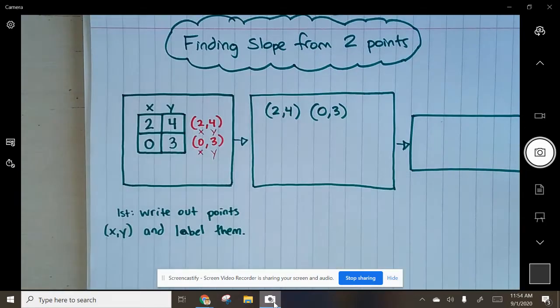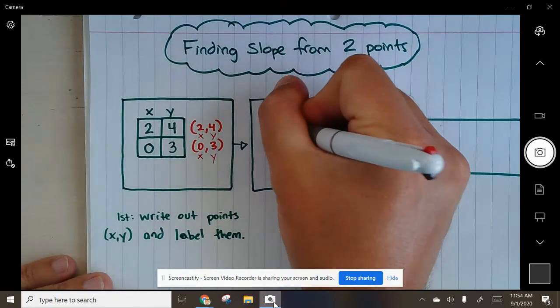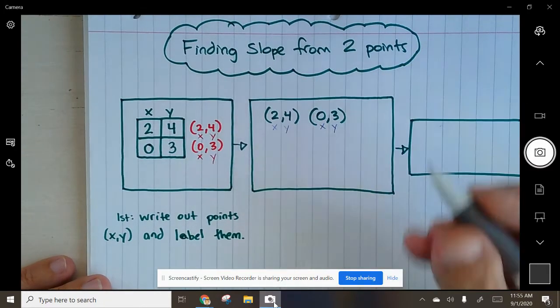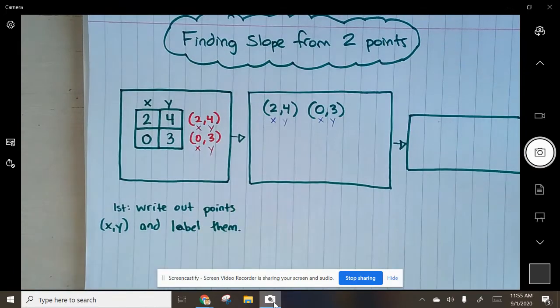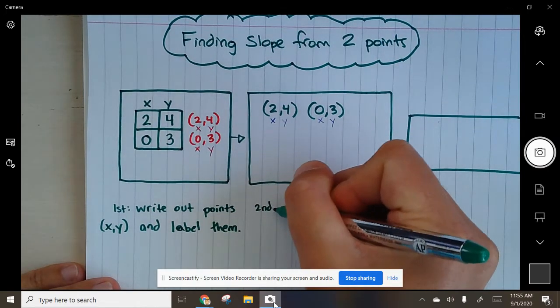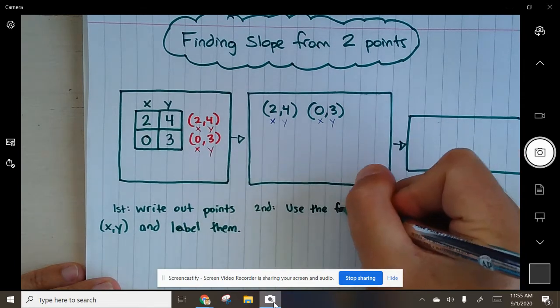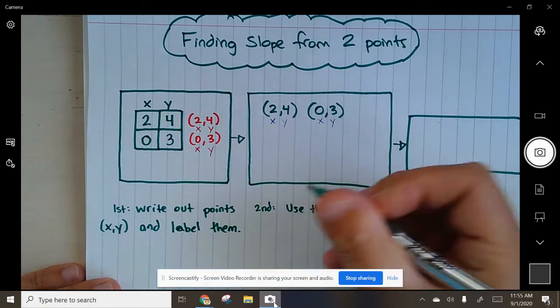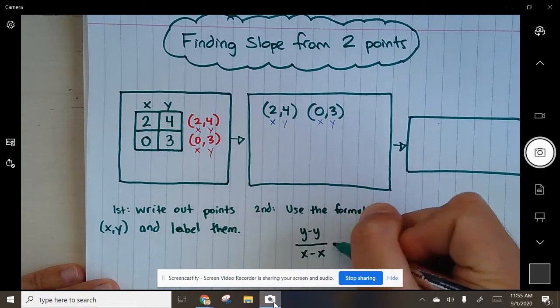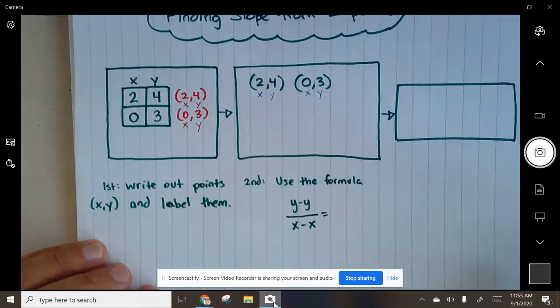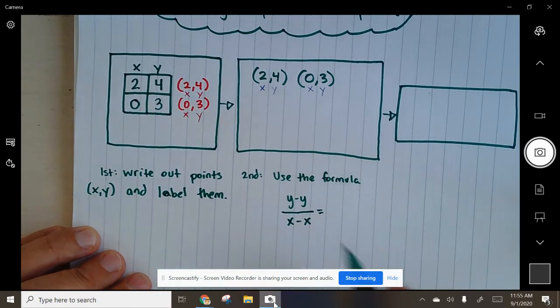Now, put your points over here. I'll have them labeled again, x, y, x, y, and then use the formula y minus y over x minus x, okay? So y minus y over x minus x.